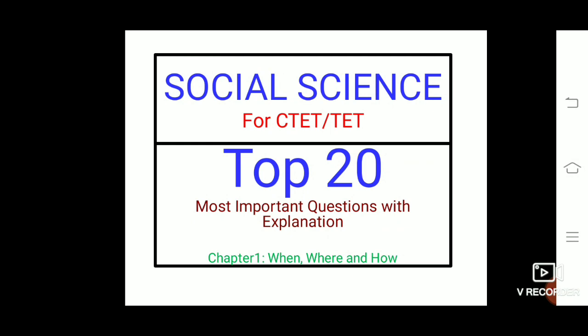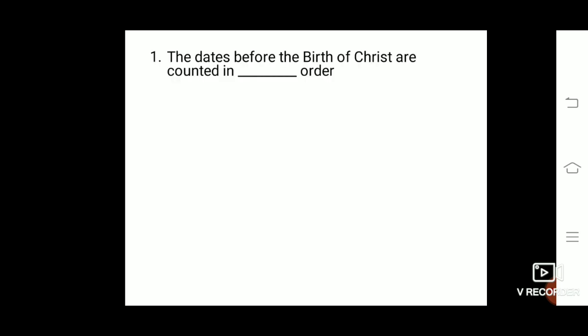Hi friends, welcome to Guru Knowledge channel. Kindly subscribe and click on the bell icon for future updates. Today in this session we will be studying about the Social Science top 20 most important questions with explanation. These questions will be important for the CTET, TET examination as well as other competitive examinations where Social Science is included. Chapter 1: When, Where and How.